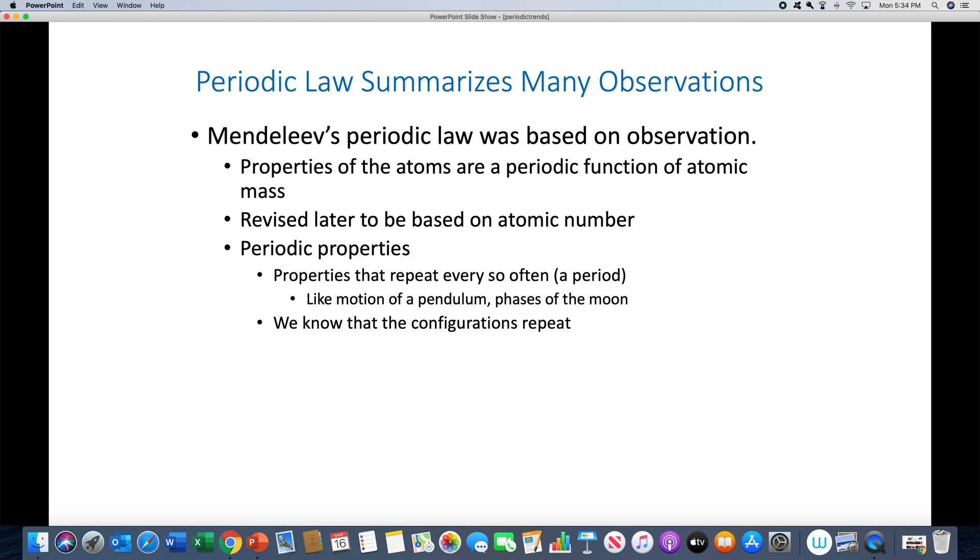And Mendeleev came up with the periodic law. Of course, this was in the 1800s. His periodic law was properties of the atoms are a periodic function of atomic mass. Later on, it was revised to be based on atomic numbers, so the modern periodic law says that the properties of the elements are a periodic function of atomic number. Now, what we mean by a periodic function is a function that repeats.